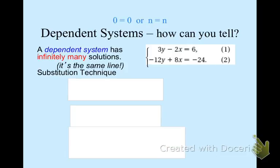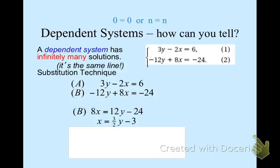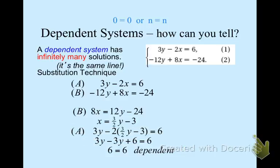When there are infinitely many solutions, if you started substituting instead of checking slope-intercept form first, the work would look like this: solving one equation for X, substituting into the other, and arriving at 6 equals 6 — which is always true, meaning infinitely many solutions and the same line. However, if we had put both equations into slope-intercept form and solved for Y first, we would also see that they are the same line.